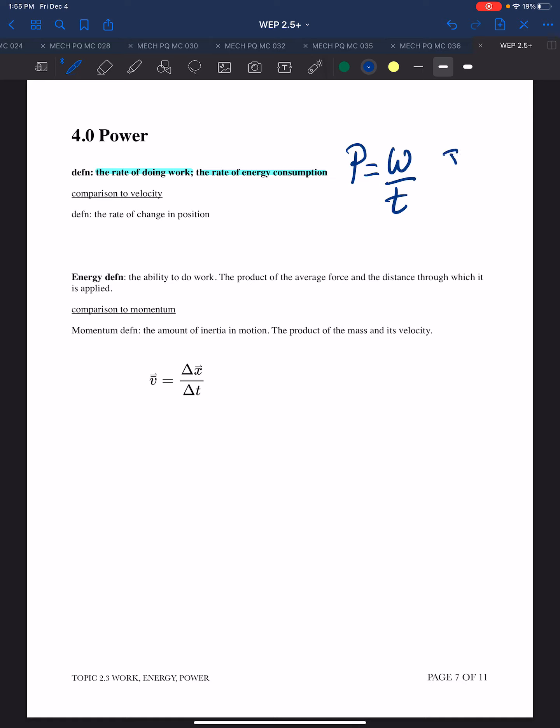And work, we know, is measured in joules, and time is measured in seconds, so that's joules per second are the unit of power. We also define that to be one watt. One joule per second is one watt.